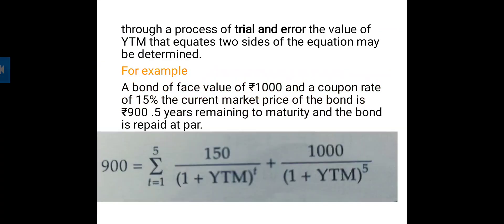Using the process of trial and error, the value of yield to maturity that equates both sides of the equation may be determined. We calculate yield to maturity by finding the particular discount rate using the trial and error method — the same method used to calculate IRR.